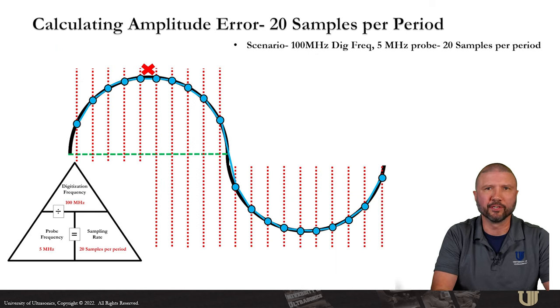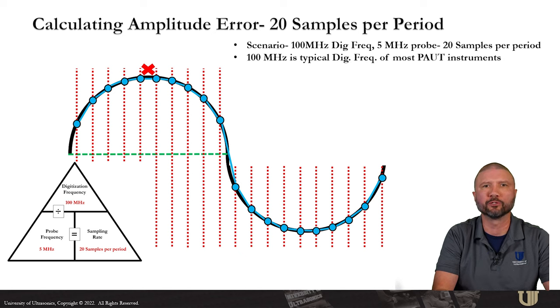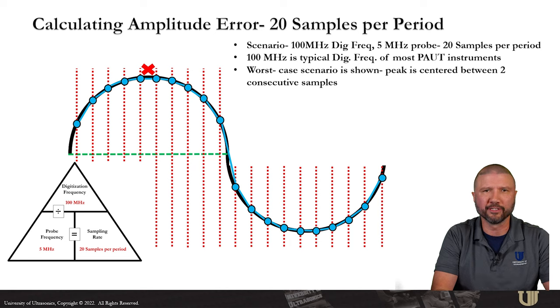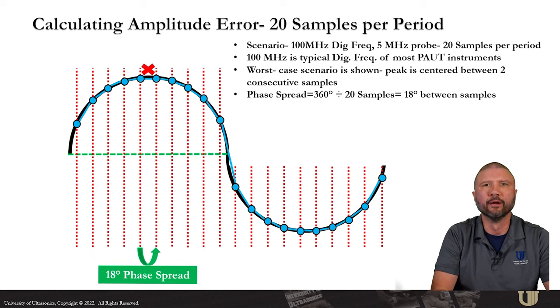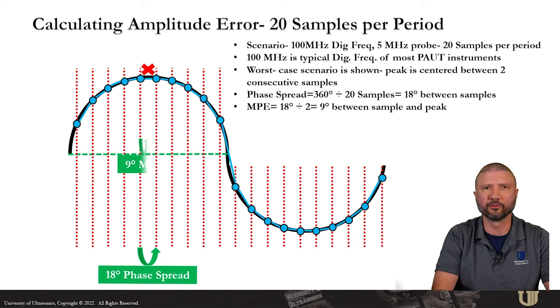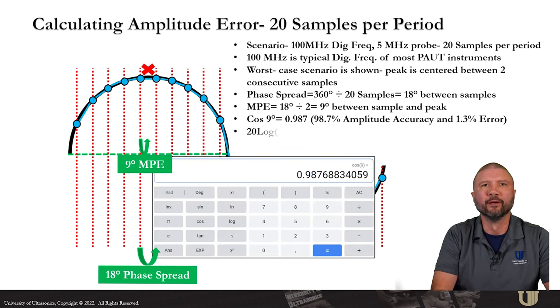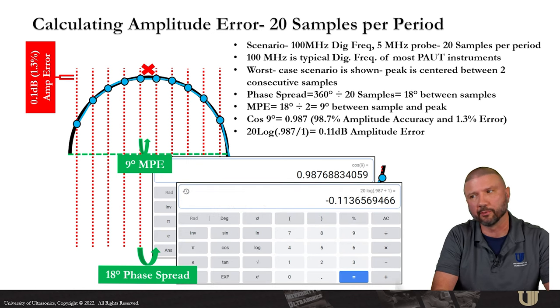For the next scenario, we'll consider using a 5 MHz probe and a 100 MHz digitizing frequency, which would result in 20 samples per period. 100 MHz is the default digitization frequency in many of today's instruments, and that's before any compression or subsampling or points quantity. More on that later. The more samples you collect, the closer and closer you get to the peak position, no matter where the samples are along your waveform. Which means the better our timing and amplitude fidelity will be. The worst case scenario is shown again, where the peak is centered between two samples. But notice, there's not a lot of daylight between the samples and the peak. Phase spread is going to be about 18 degrees between samples. And if I divide that by two, I can show that there are 9 degrees between the sample and the peak. Cosine of 9 degrees is about 0.987, which would be 98.7 percent accuracy and about 1.3 percent error. And if we convert that to a dB, we're about 0.1 dBs away from the peak.